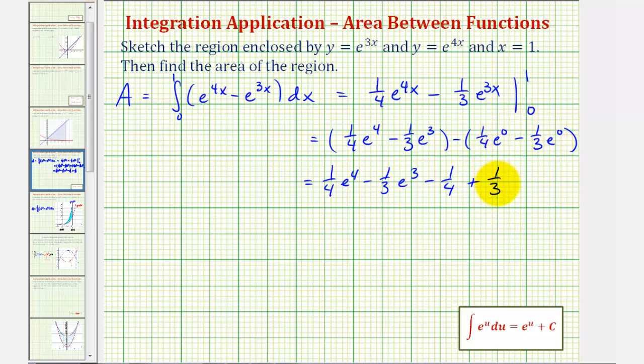And now to combine these fractions, our common denominator would be 12. Multiply this by 3 over 3, multiply this by 4 over 4. So we have 1 fourth e to the 4th minus 1 third e to the 3rd. This would be negative 3 twelfths plus 4 twelfths or plus 1 twelfth. So this would be the exact area.